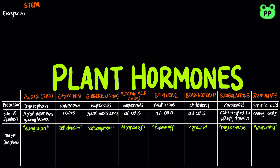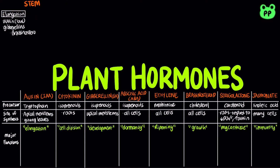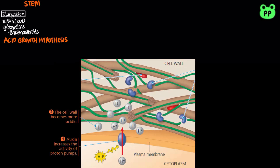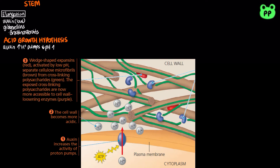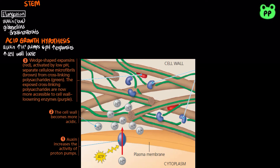Stem elongation is stimulated by low concentration of auxin, as well as gibberellins and brassinosteroids. According to the acid growth hypothesis, auxin stimulates proton pumps in the plasma membrane, which lowers the pH in the cell wall, activating expansins, which are enzymes that loosen the cell wall's fabric. With the cellulose loosened, the cell can then elongate. Cell elongation is actually the major mechanism in plant growth.